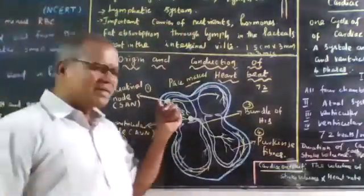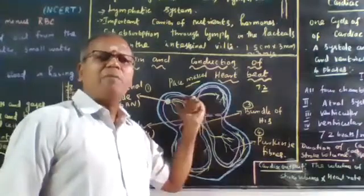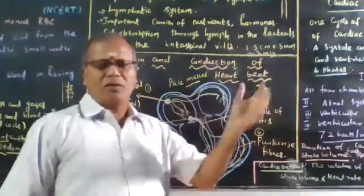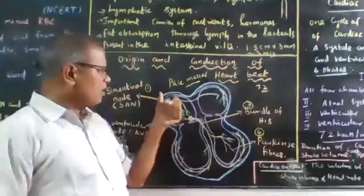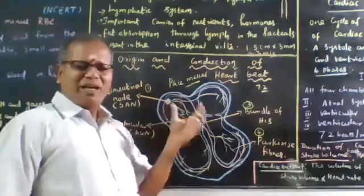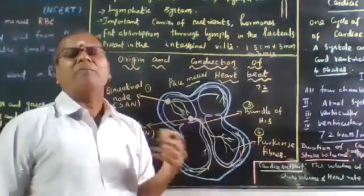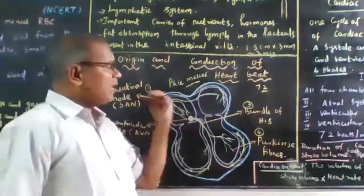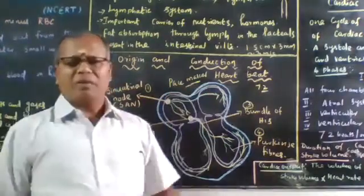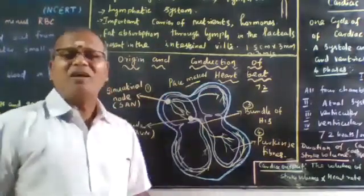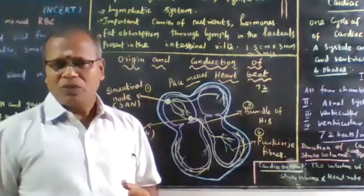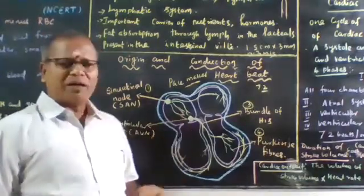The electrical impulses in the sino-auricular node is straightaway passed on to the left auricle, in the right auricle, and the right ventricle.